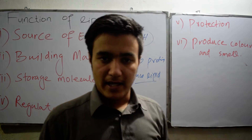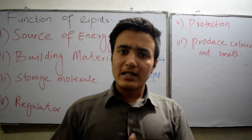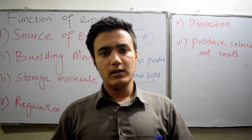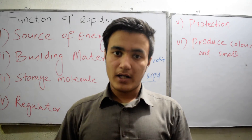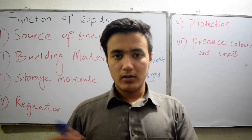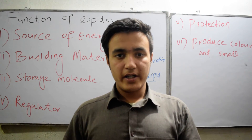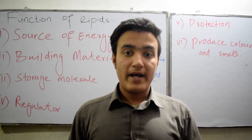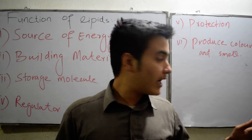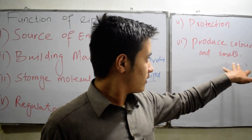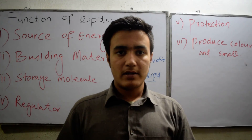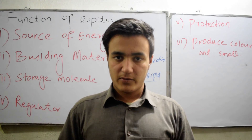The last function is producing color and smell. In derived lipids, there are carotenoids which have yellow, dark red, and greenish colors, giving color to flowers and leaves. The smell in fruits and flowers is also produced due to carotenoids, so they are used as natural perfumes. Thanks for watching.